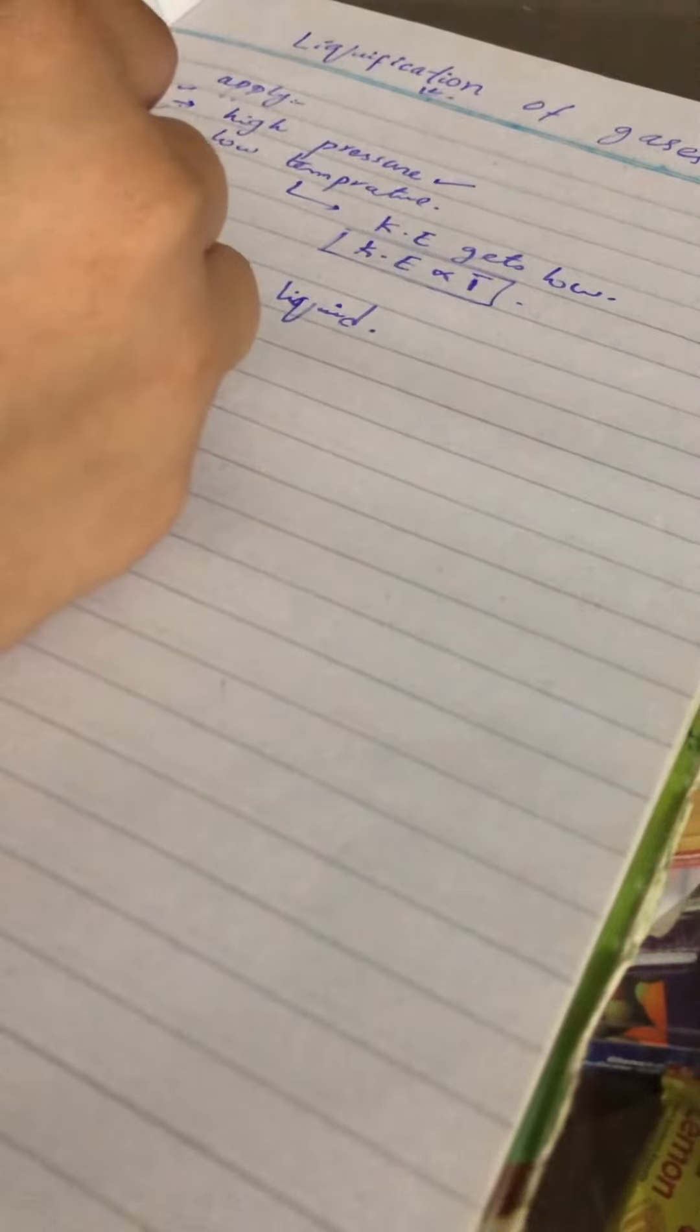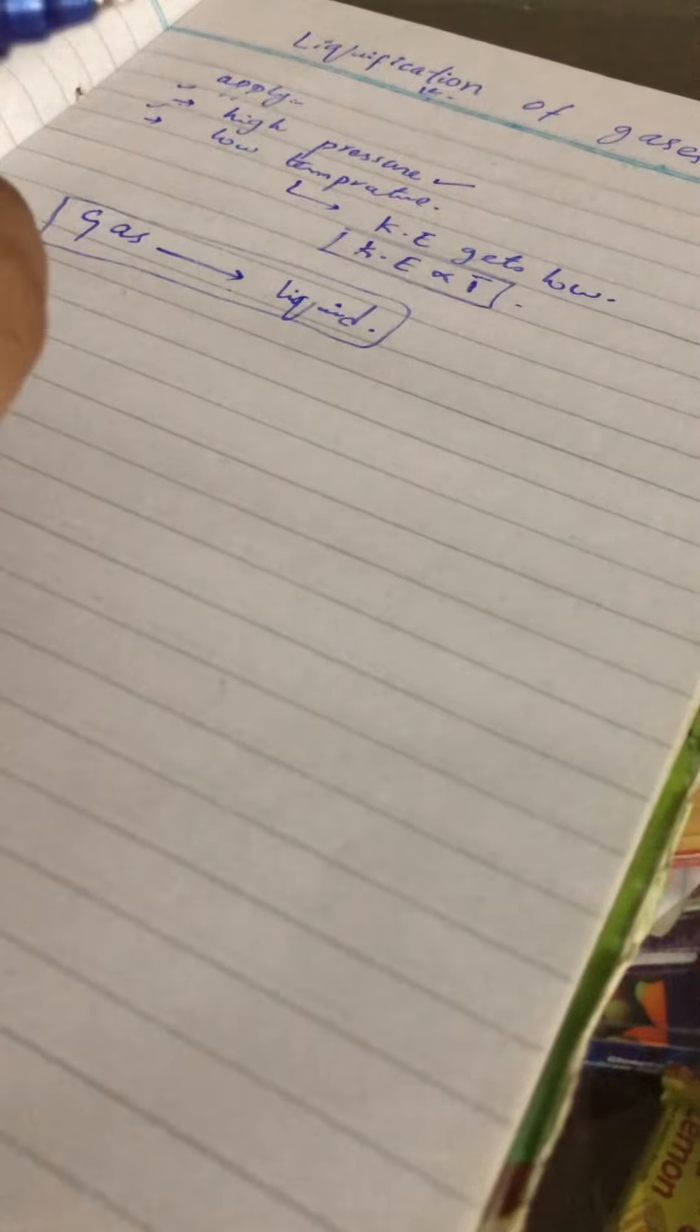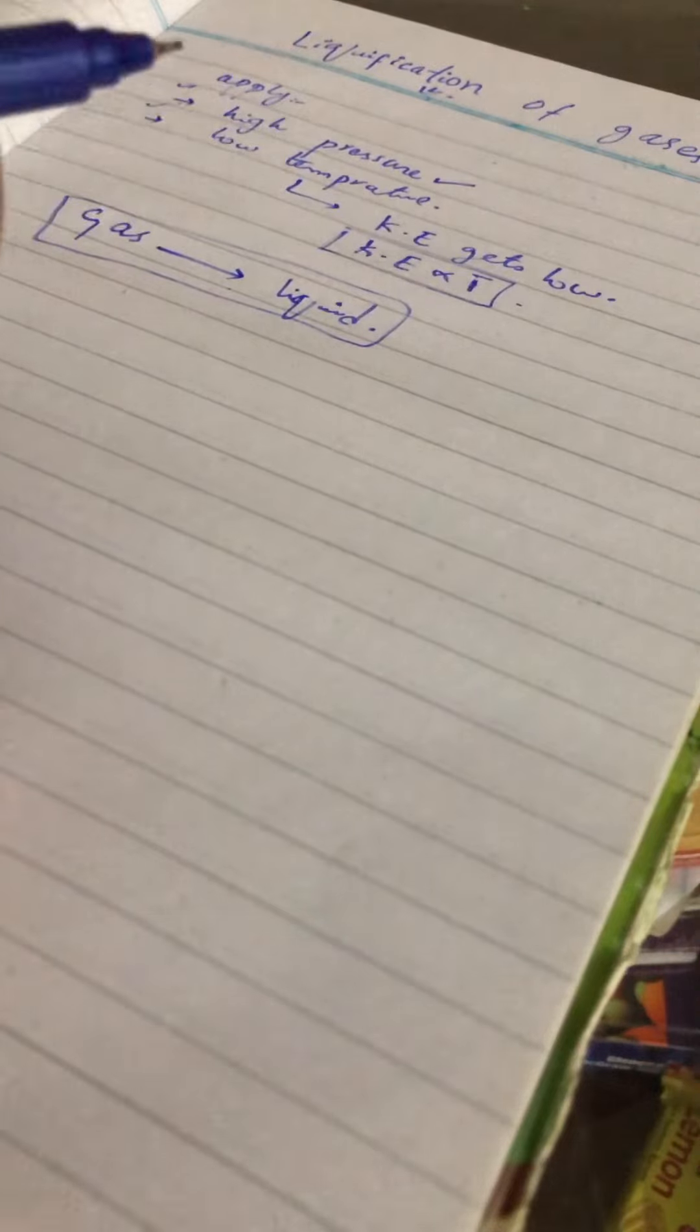After that in this we are having some terms that call the critical temperature, critical pressure, and critical volume.